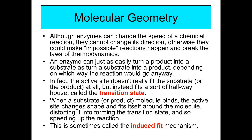Even though enzymes can change the speed of a chemical reaction, they really don't change its direction — otherwise they would make impossible things happen and break the laws of thermodynamics. An enzyme can just as easily turn a product into a substrate as turn a substrate into a product, depending on which way the reaction would go. The active site doesn't really fit the substrate or the product perfectly, but instead fits a sort of halfway transition state. This is referred to as an induced fit mechanism.